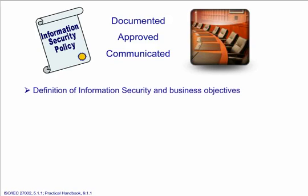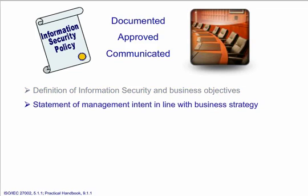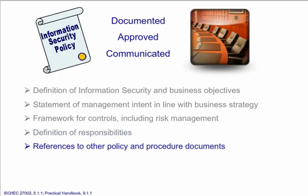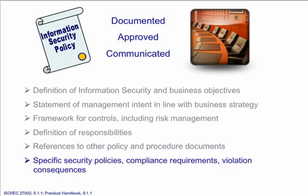The information security policy document will contain information such as a definition of information security and the organization's business objectives, a statement of management intent in line with the business strategy, a framework for setting controls including those for risk management, a definition of general and specific responsibilities for information security management, and references to other policy and procedure documents that support this policy. Additionally, the information security policy document should contain a brief explanation of specific security policies and compliance requirements and violation consequences.